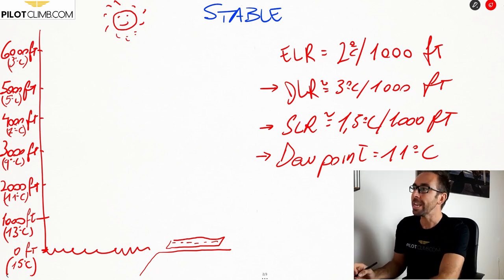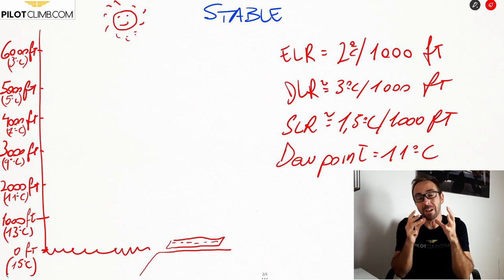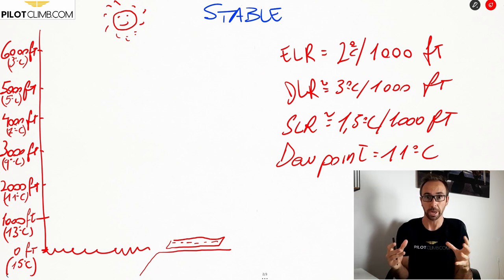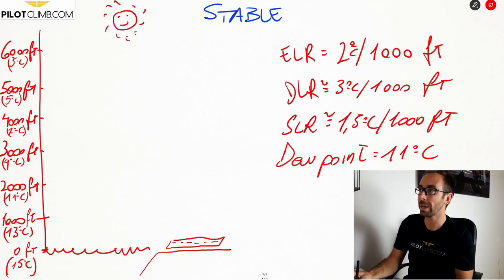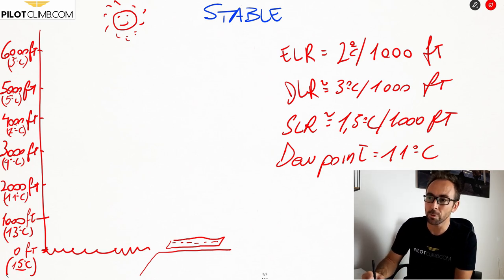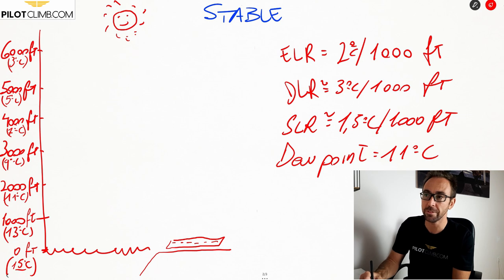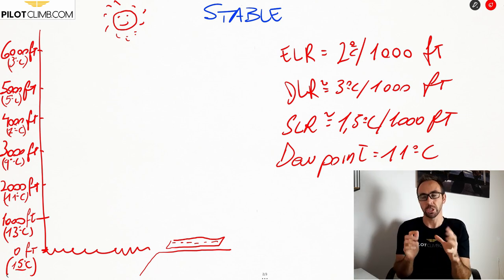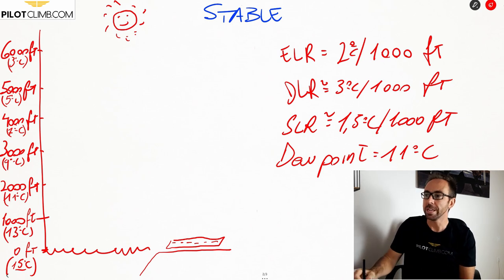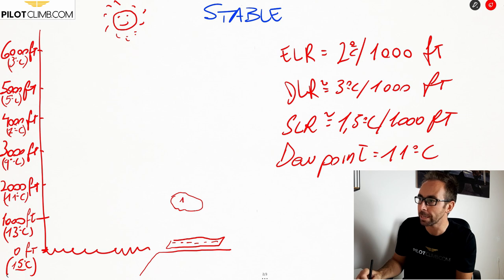In order to understand atmospheric stability, we really need to compare the environmental lapse rate to the lapse rate of an air mass — that is crucial. In this stable atmosphere example, at 0 feet the temperature is 15°C, at 1,000 feet it's 13°C, at 2,000 feet it's 11°C — because every 1,000 feet the temperature drops by 2 degrees. Now, what will happen if you have a mass of air at 1,000 feet with a temperature of 18°C?